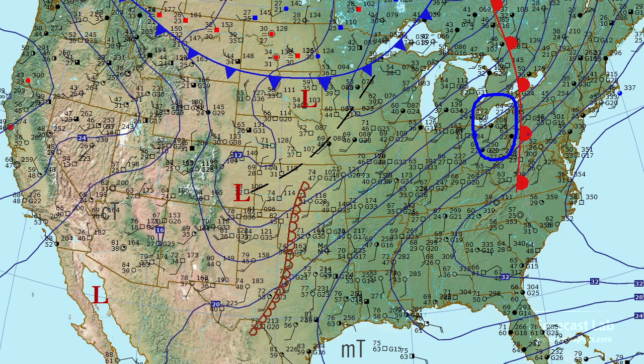Columbus — all in the 60s — but New York's still stuck in the icebox with upper 30s. And in between, there's that warm front heading west to east.